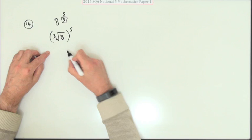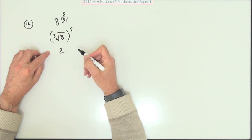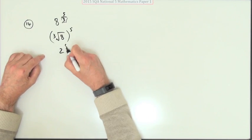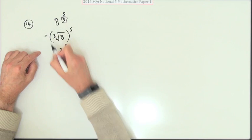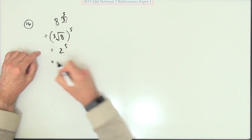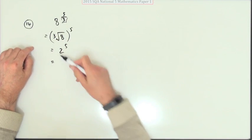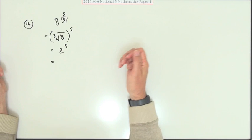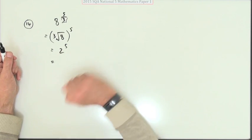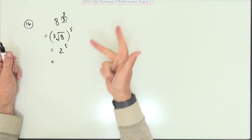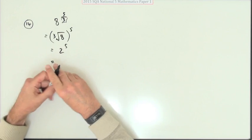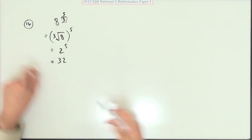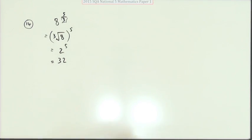The cube root of eight is two, because two times two times two is eight. Then two to the power five: two, four, eight, sixteen, thirty-two. So the answer is thirty-two.